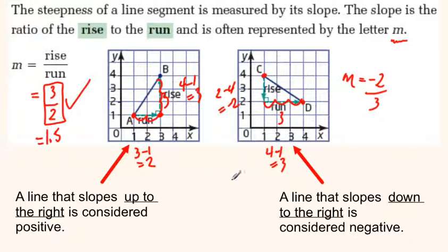A line that slopes down to the right, now it's going down as we go from left to right, is considered a negative slope. This is kind of like our positive correlation and our negative correlation.